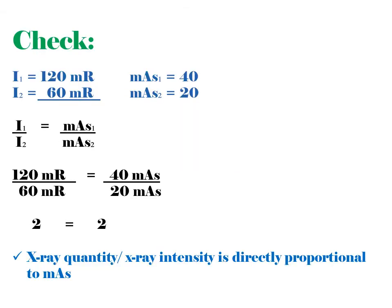Let's check. Now we know what is intensity 2, which is 60 mR. Let's divide the following by itself, both intensity and mAs. 120 mR divided by 60 mR equals 2. 40 mAs divided by 20 mAs equals 2.